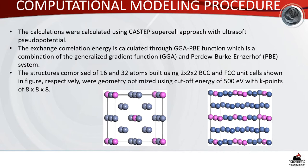For the computational modeling procedure, calculations were done using CASTEP with the supercell approach and ultra-soft pseudopotential. The exchange-correlation energy was calculated through GGA and PBE. The structures were comprised of 16 and 32 atoms built using 2×2×2 for BCC and FCC unit cells. The cut-off energy was 500 eV and the k-points were 8×8×8.